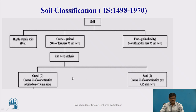The distinction between gravel and sand can be made based on sieve analysis. We look at the percentage of material retained on the 4.75 mm sieve. If the percentage of coarse fraction retained on the 4.75 mm sieve is greater than 50%, it is called gravel. If it is less than 50%, it is called sand. Further classification of gravel and sand will be seen in the next slide.